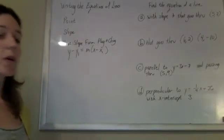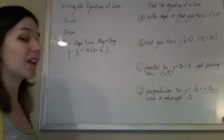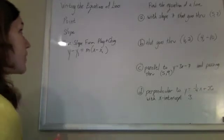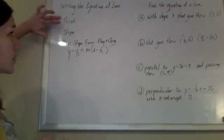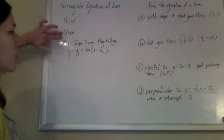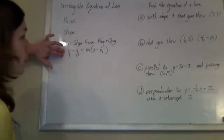Okie dokie. So whenever a question asks us to find the equation of a line, we say yay, because we know what to do. If we can find a point and a slope, we can just plug it into point-slope form and we'll be good.